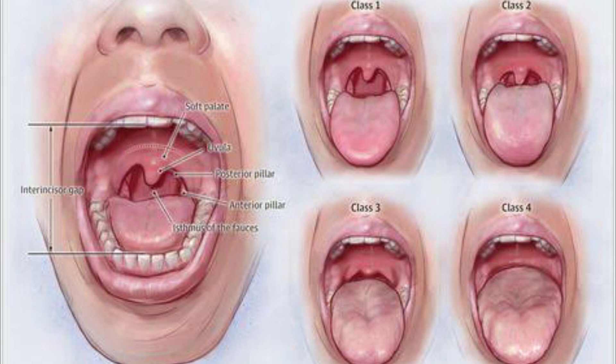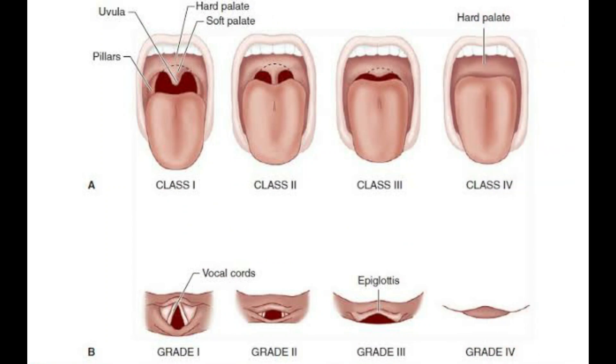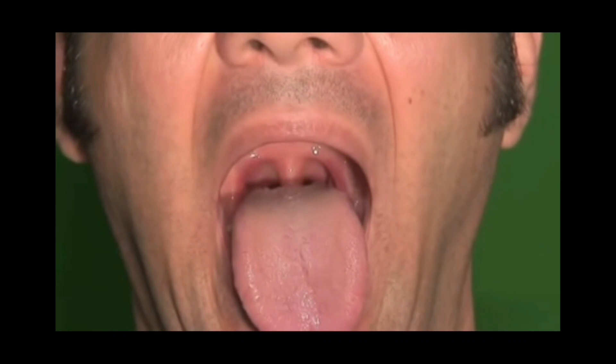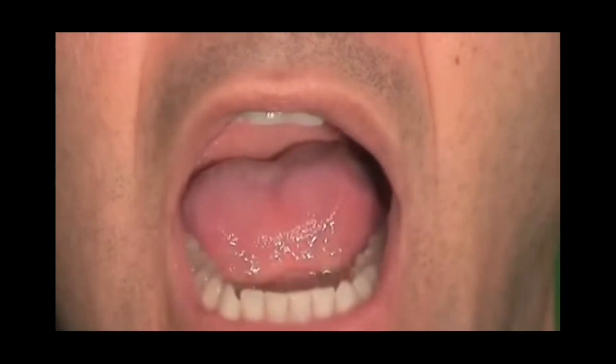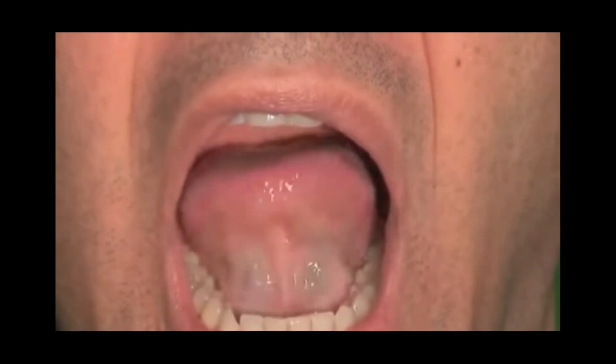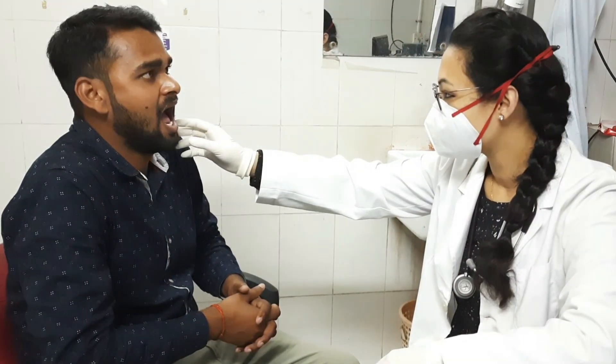Mallampati grading is one of the most commonly employed tests. It indicates the amount of space within the oral cavity to accommodate the laryngoscope and the endotracheal tube simultaneously, and is also associated with the laryngoscopic view of the glottis. This is performed by having the patient open their mouth as wide as possible and stick out their tongue without phonation, in sitting position at the observer's eye level. The degree to which the faucial pillars, uvula, soft palate, and hard palate are visible are graded.